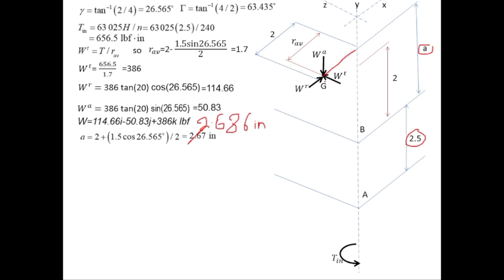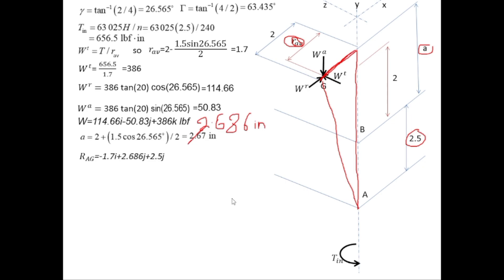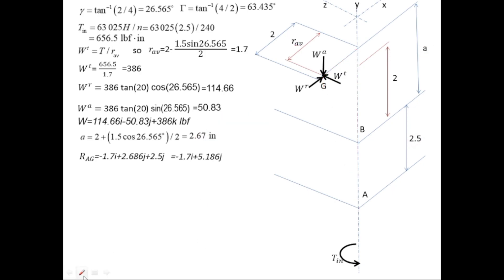We know the distances, so we can find the distance between point A and the force application point G. Writing r_AJ in unit vector form: the component in positive y direction uses unit vector j, and r_average in negative x direction uses −i. So r_AJ = −1.7i + 2.646j + 2.5j = −1.7i + 5.186j. The distance from A to B, r_AB = 2.5j.